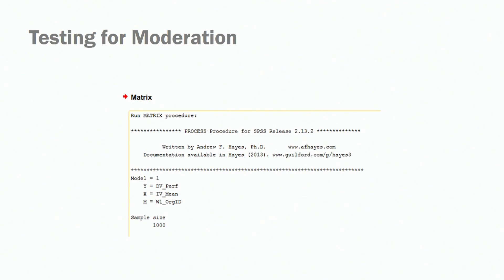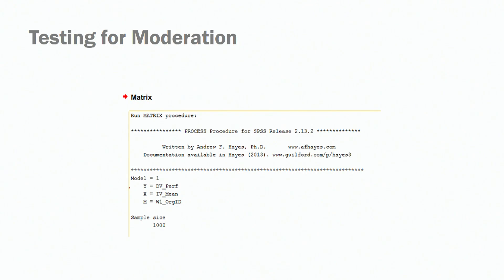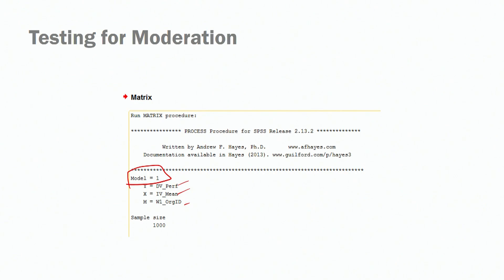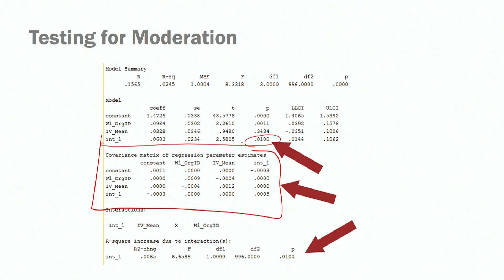Click OK and you have the output file. Double-check that you got model number one. In our moderation models, we look at the effects of the interaction term. In this case, we have an interaction term that is significant — the relationship between the interaction term and our dependent variable, performance, is significant. P is less than 0.05. The second thing to look at in your output file is the covariance table — remember that the covariance of a variable with itself is the variance. Keep in mind that language, because we'll need those coefficients when plotting our interaction graph and getting the simple slope analysis.